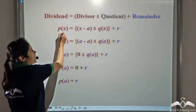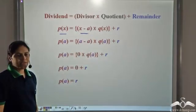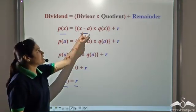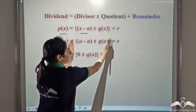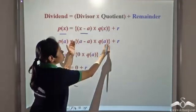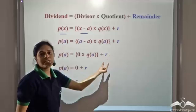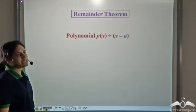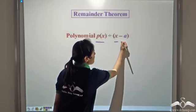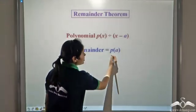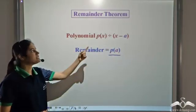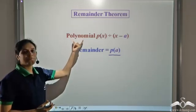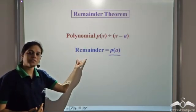In general, if we divide a polynomial by a linear divisor x minus a, then P(a) gives us the remainder of the division. Because substituting x equal to a makes x minus a become zero, so the entire quotient part becomes zero, and we are left with only the remainder. This is the remainder theorem: if we divide P(x) by x minus a, the remainder equals P(a). So you can calculate the remainder even without dividing.